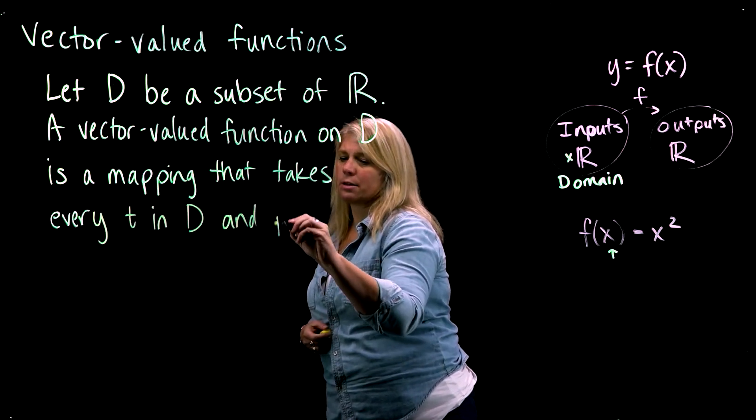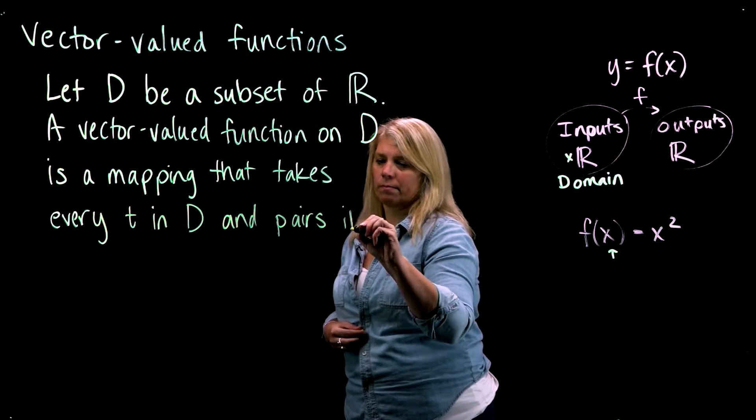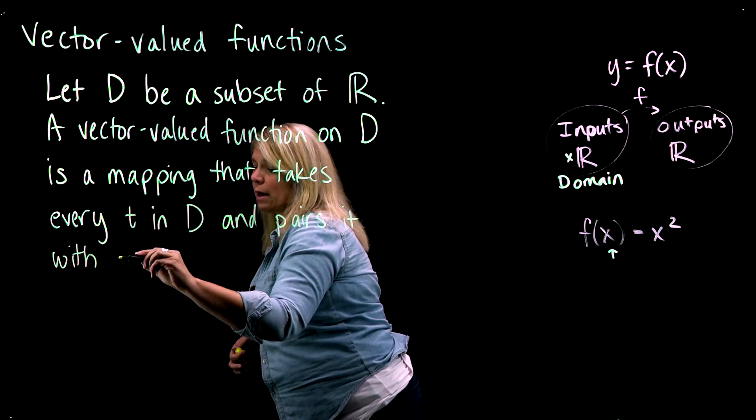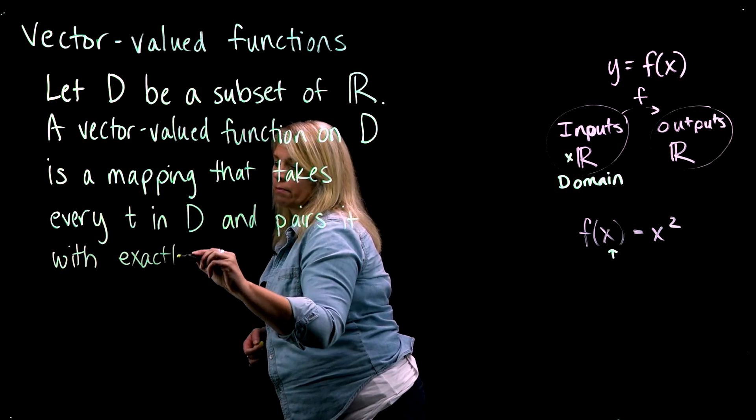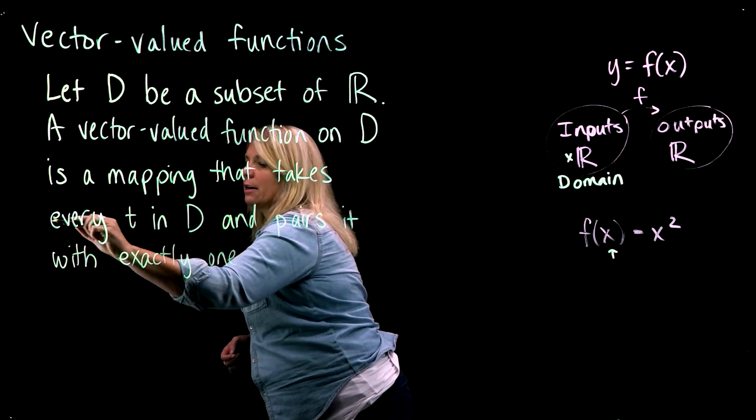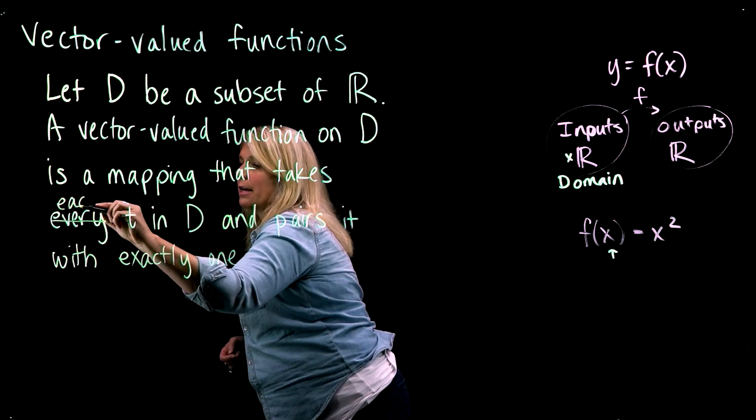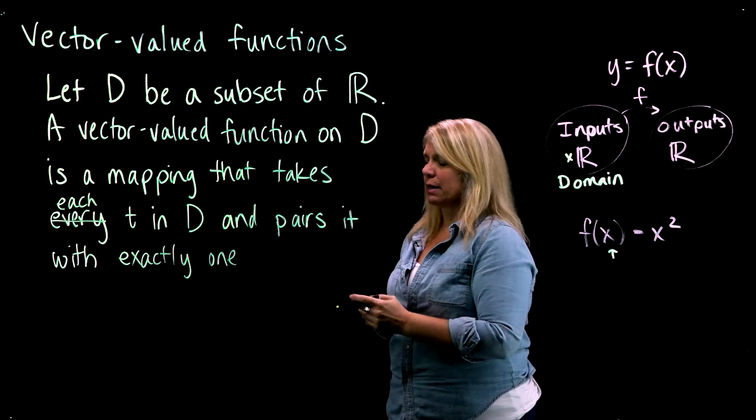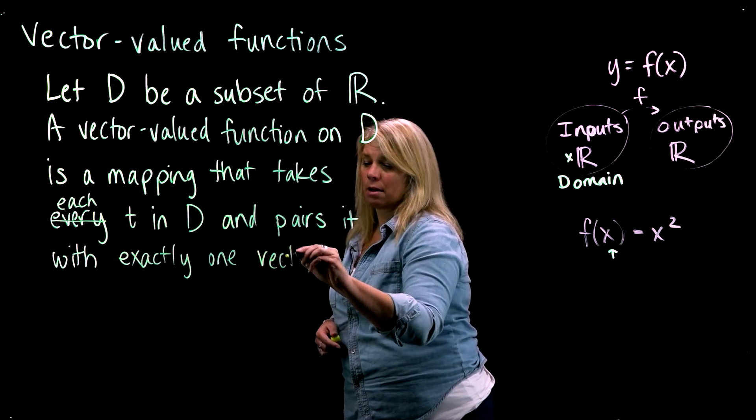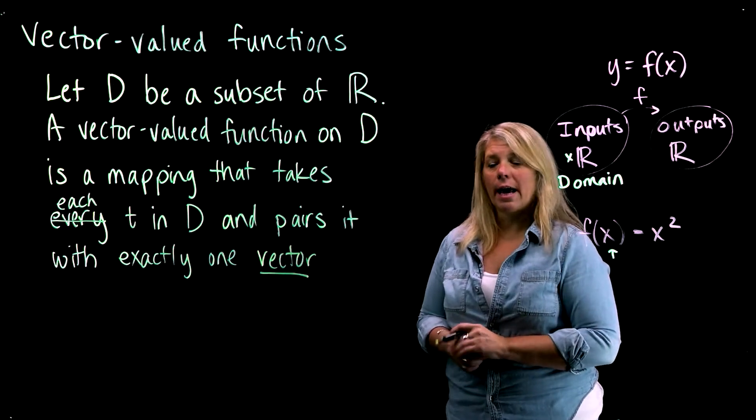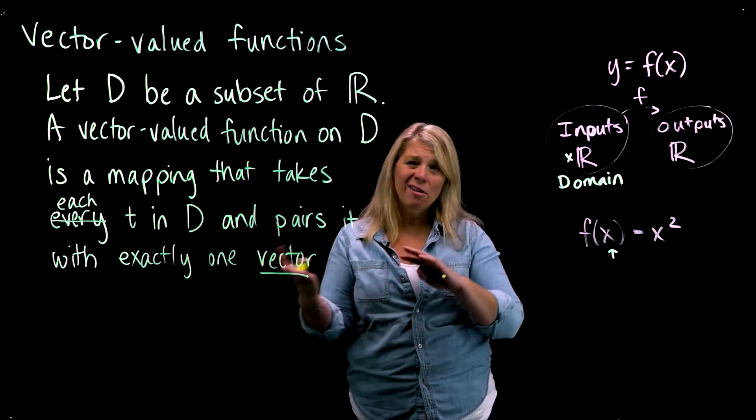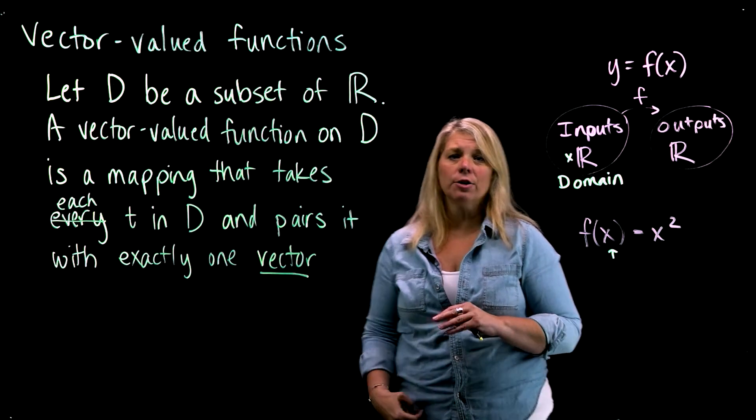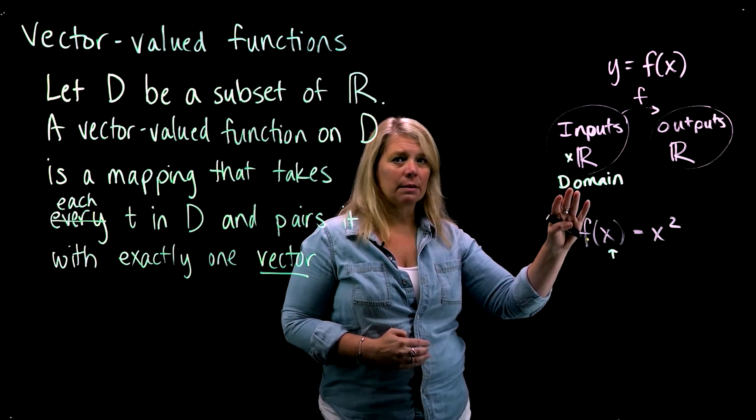And pairs it with exactly one—each t is paired to exactly one vector in ℝⁿ. I underline that because you should notice that's where what I'm writing down for vector-valued functions differs from what I talked about before.